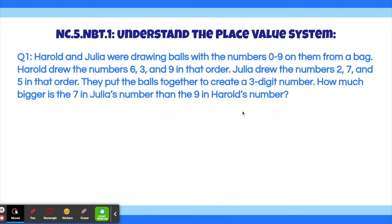Alright, let's get started with question number 1. Harold and Julia were drawing balls with the numbers 0 through 9 on them from a bag. Harold drew the numbers 6, 3, and 9 in that order. Julia drew the numbers 2, 7, and 5 in that order. They put the balls together to create a 3-digit number. How much bigger is the 7 in Julia's number than the 9 in Harold's number?